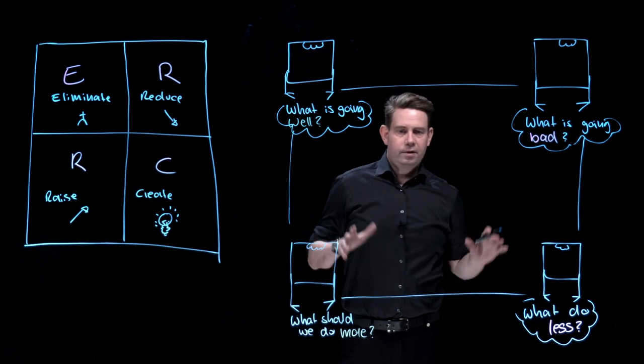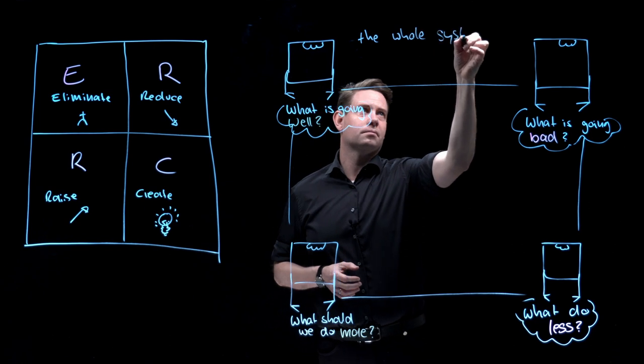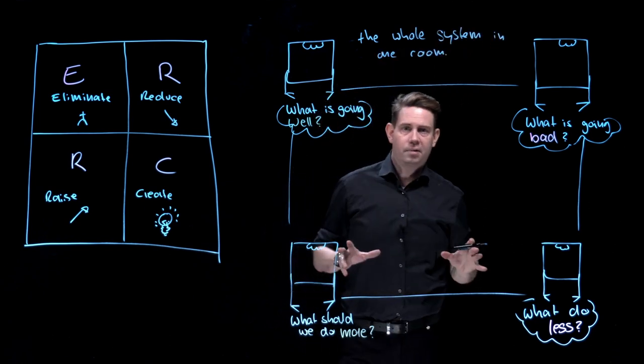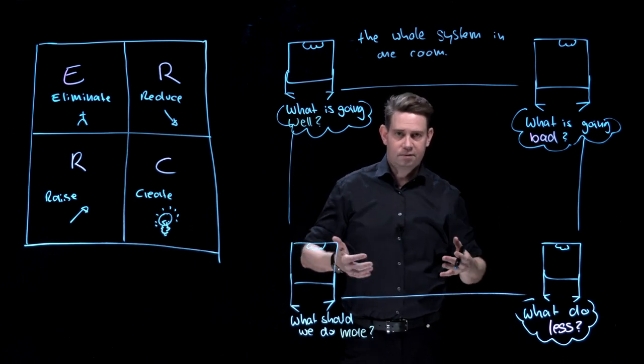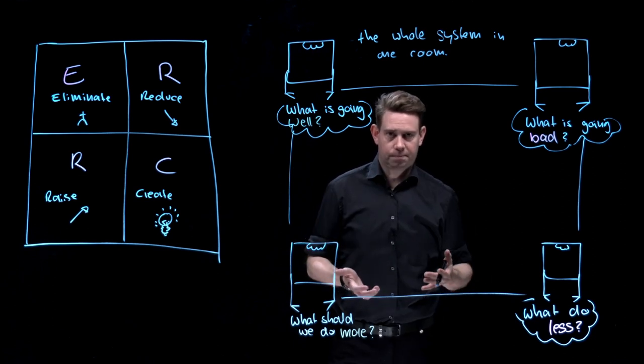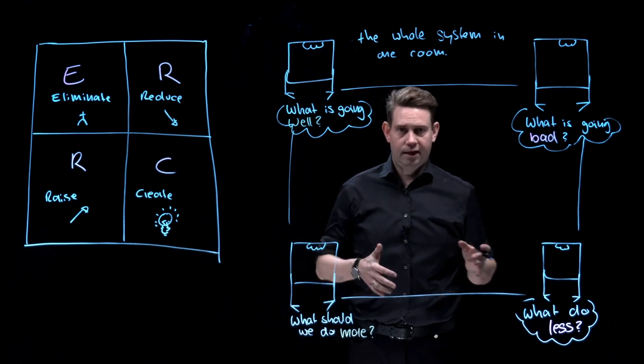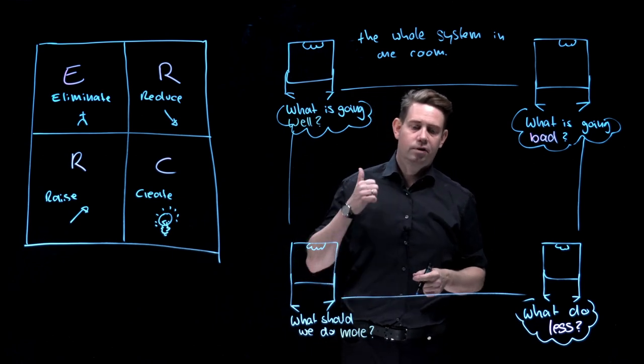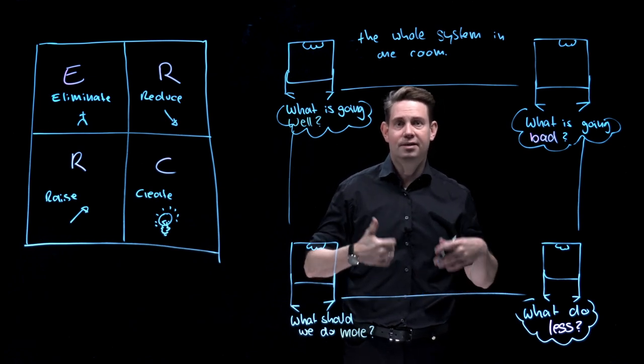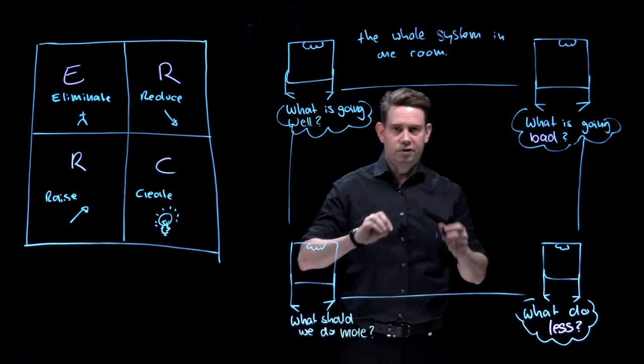And in the room, we have the whole system. And by the whole system, I mean everyone who is affected by the change, represented by at least one person. So if you have 500 people in 10 departments, you get one person from every department at least. So 10 departments, 10 people, up to 20 people. Participation is voluntary.